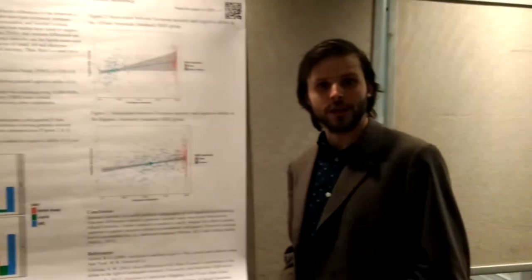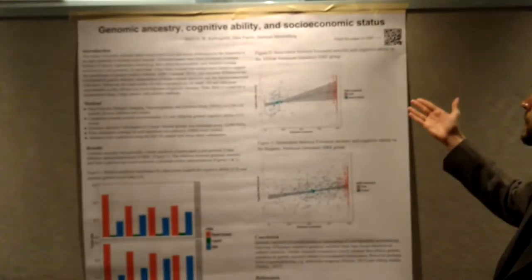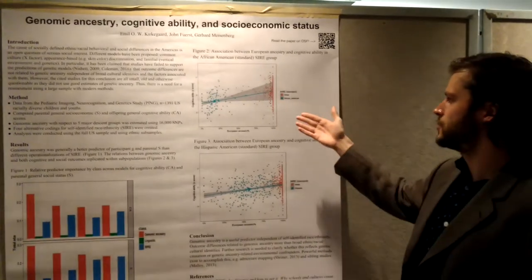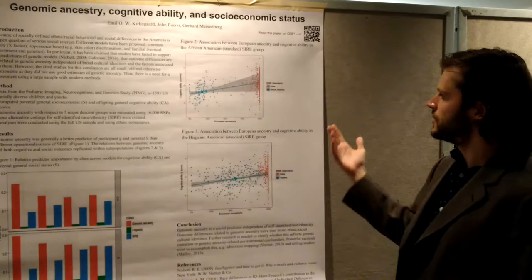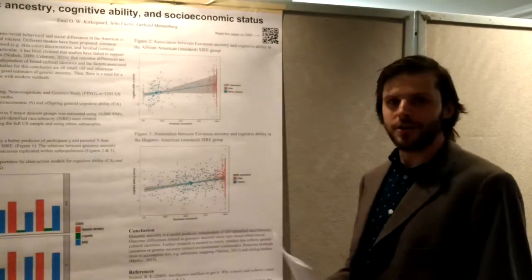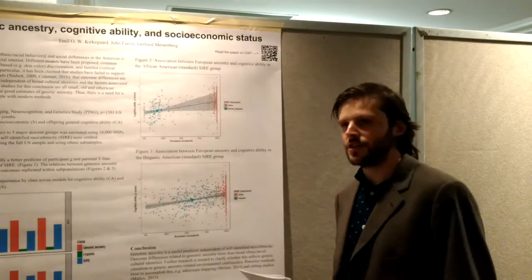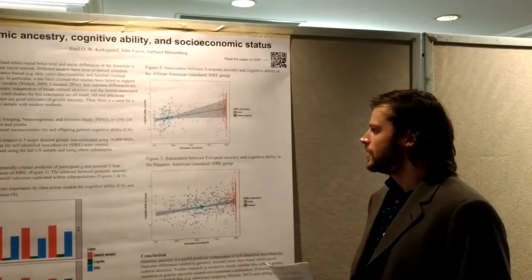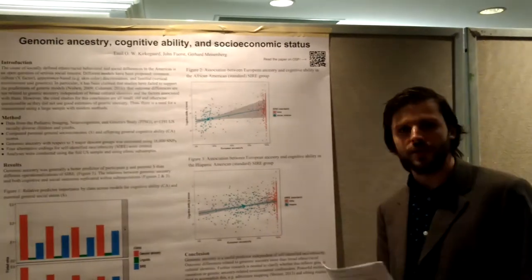We're going to do something different — we're doing a poster presentation. We're essentially looking to find out if Jensen is correct or not. Jensen declared it would be a not unreasonable hypothesis that there are genetic causations in race group IQ differences, and it's something that was a very heated discussion for many years.